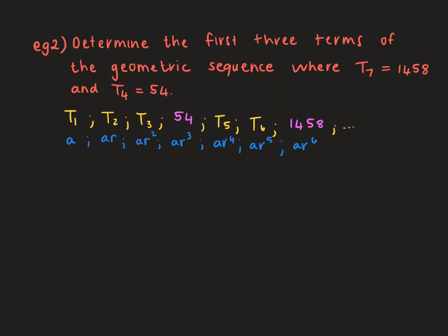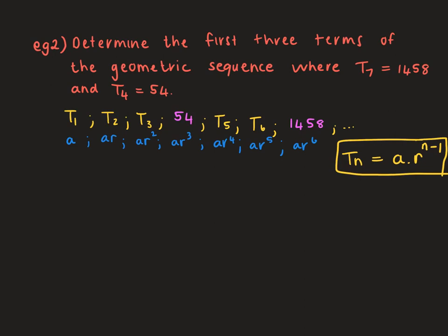In the arithmetic sequence, term 2 was A plus 1D and term 3 was A plus 2D — the coefficient of D was one less than the position of the term. Now in geometric sequences we have the same thing, just working with the constant ratio R, and the exponent is one less than the position. The general term is TN equals A times R to the power of N minus 1, which explains why the exponent is one less than the position.